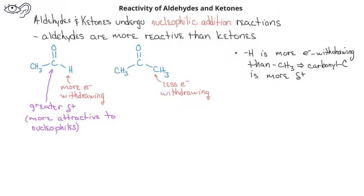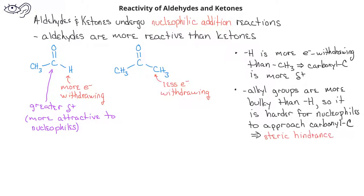Another factor which makes aldehydes more reactive than ketones is that ketones have very bulky alkyl groups bonded to the carbonyl carbon, whereas aldehydes have at least one hydrogen bonded to the carbonyl carbon. Since the alkyl groups are much larger, when nucleophiles try to add to the carbonyl carbon they experience more steric hindrance, which slows down the reactivity of ketones.